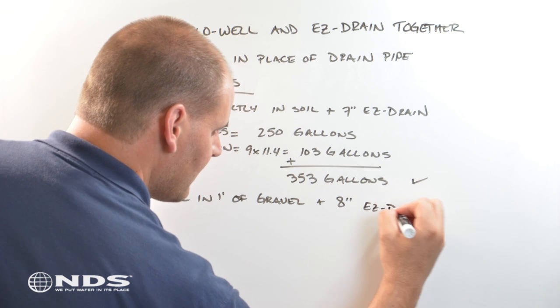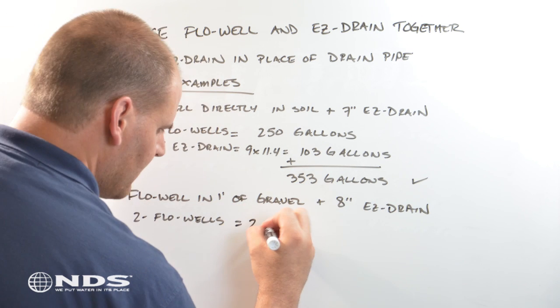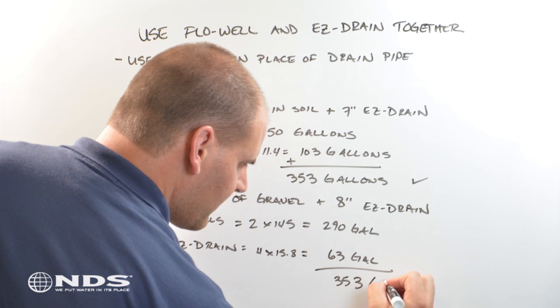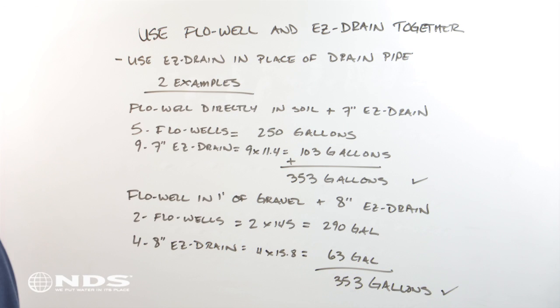Now, if we use flow wells installed with 1 foot of gravel backfill and 8 inch easy drain, two flow wells can store 290 gallons and four sections of easy drain can store 63 gallons. Together, this system can also store 353 gallons of water.